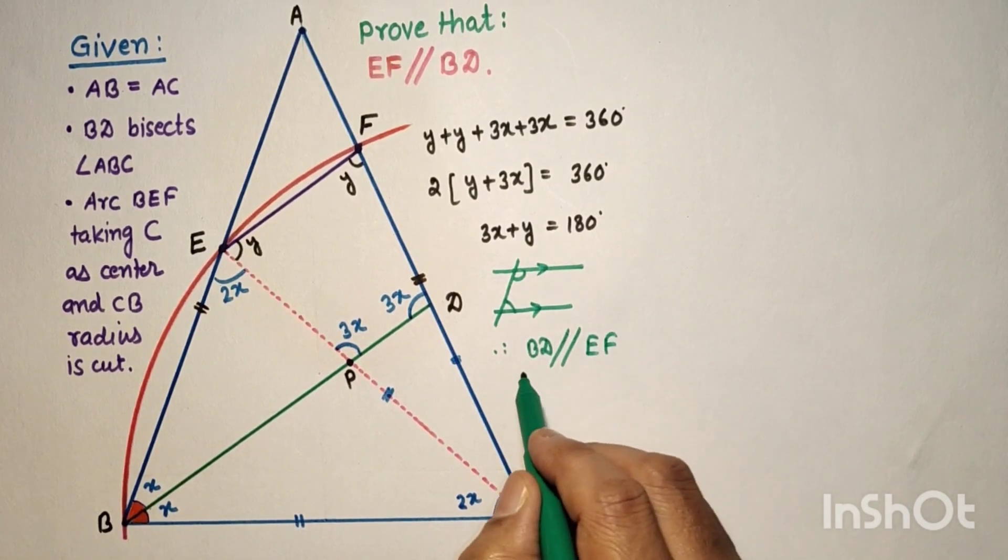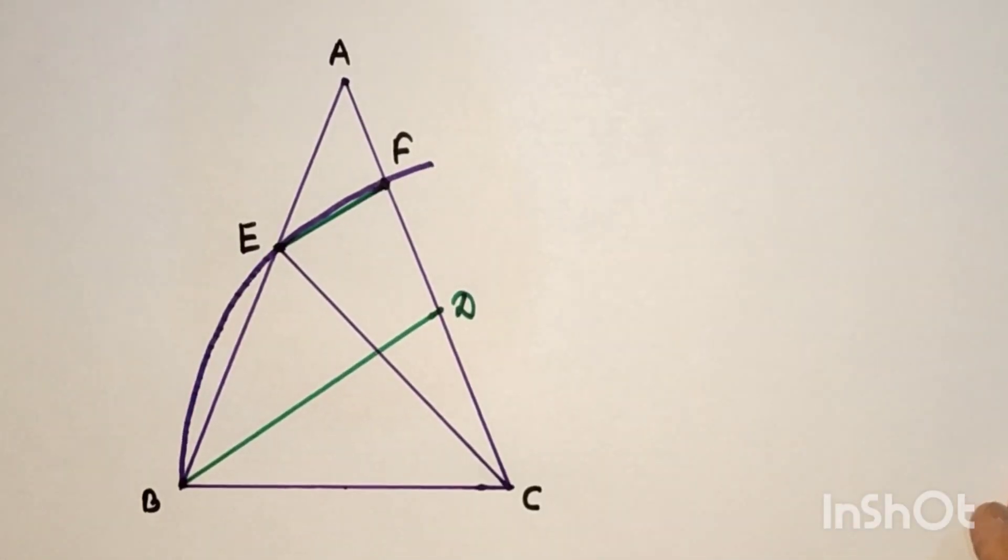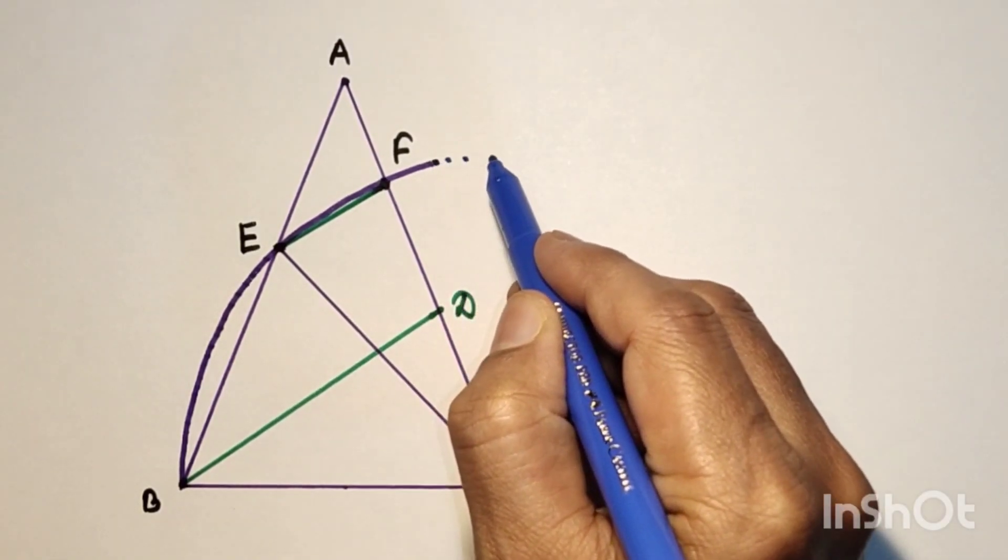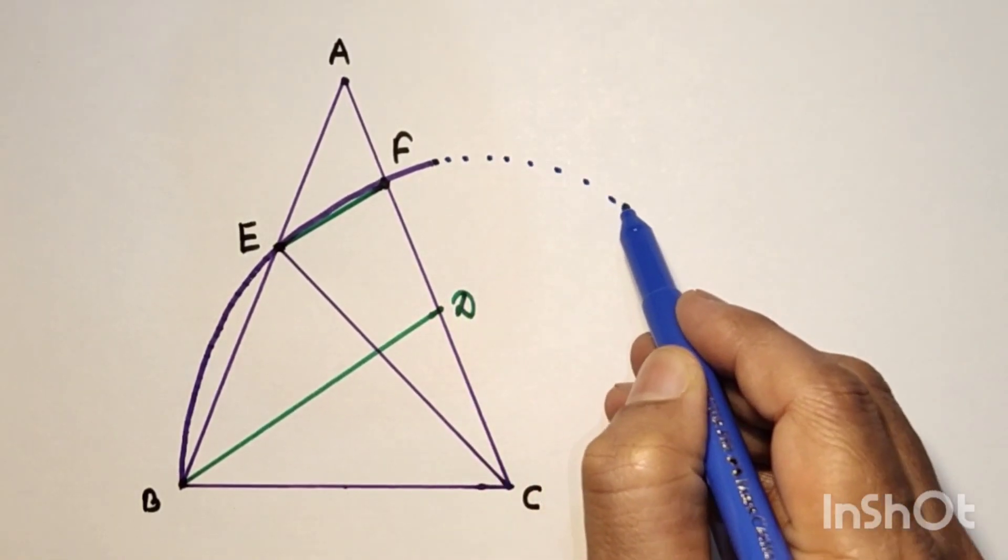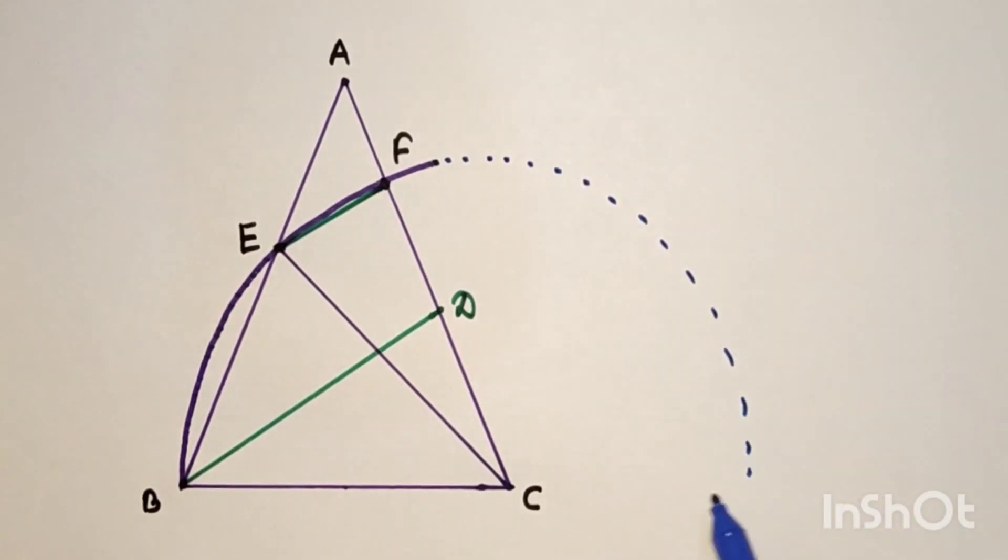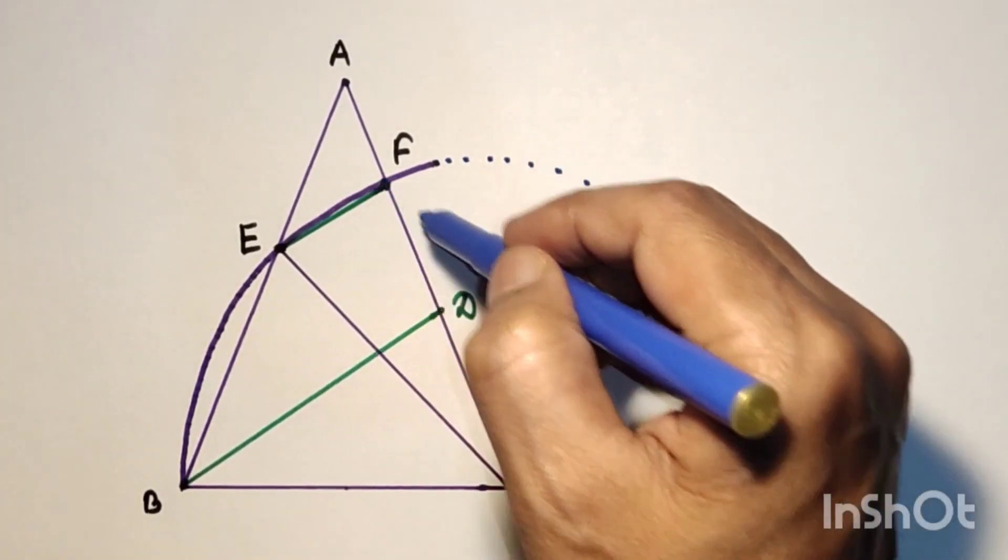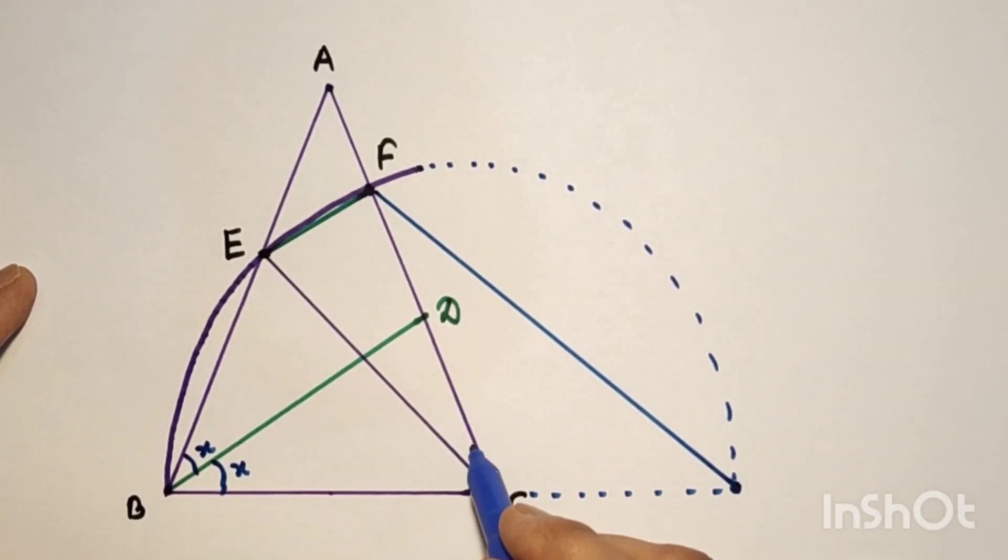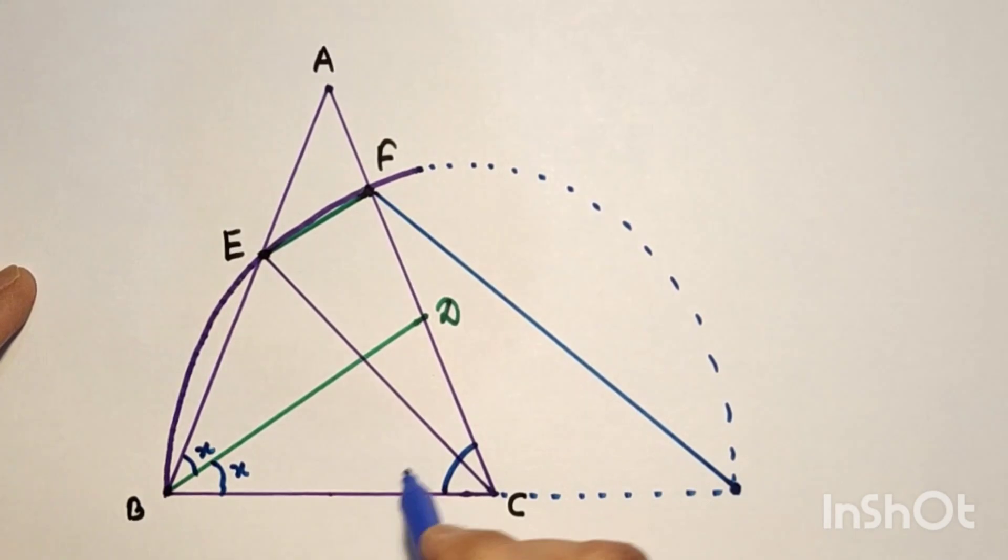If we do another method, extend this and extend this, and take any point here. We have already assumed that this angle is X because BD is bisector, and this is also 2X.